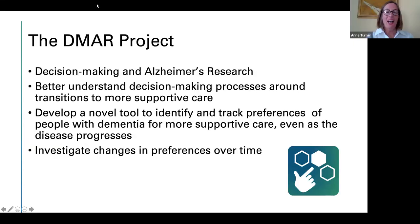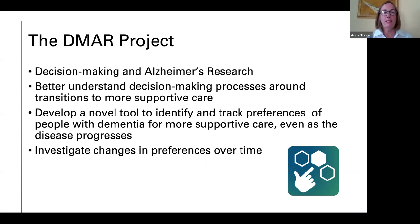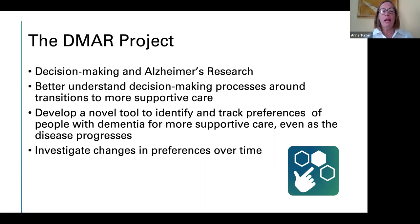Working together with the community has been the most effective strategy to address challenges introduced by the COVID pandemic. Hi, my name is Ann Turner. I'm a professor at the University of Washington and principal investigator of the Decision Making and Alzheimer's Research Project. This project is a five-year research project to better understand decision-making processes around transitions of receiving more supportive care for individuals with dementia. We are developing a novel tool to identify and track preferences of people with dementia for more supportive care, even as their disease progresses, and then investigate those changes in preferences over time.